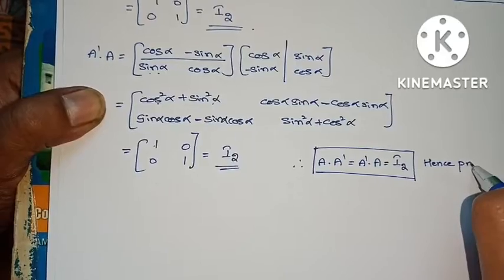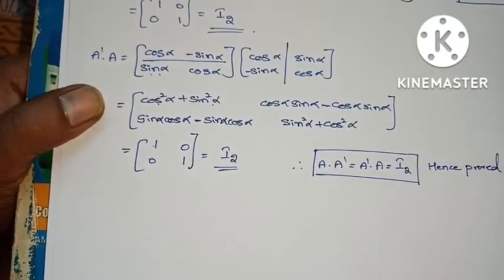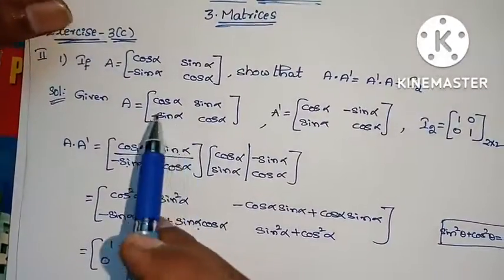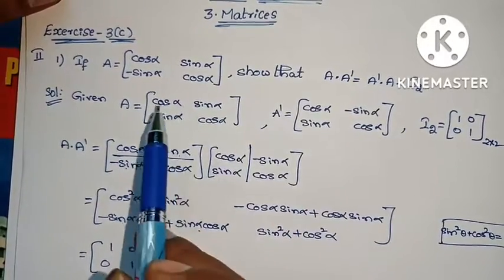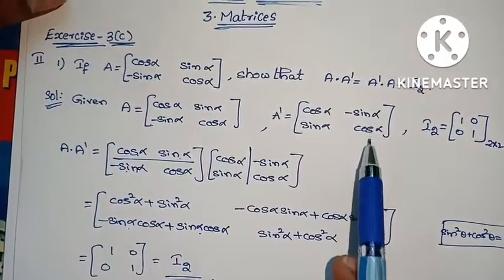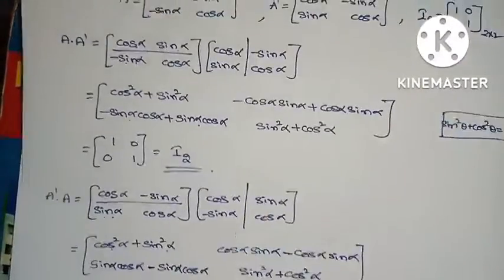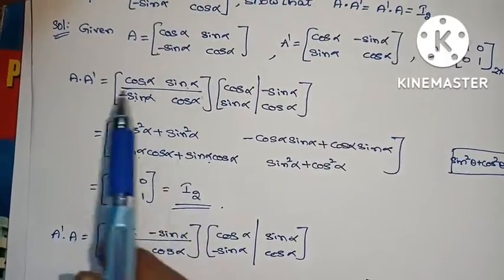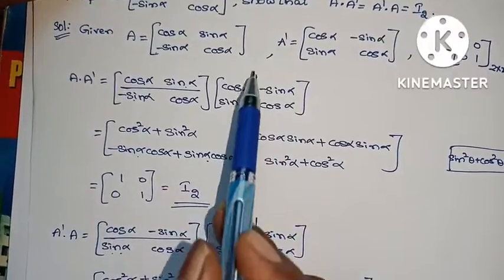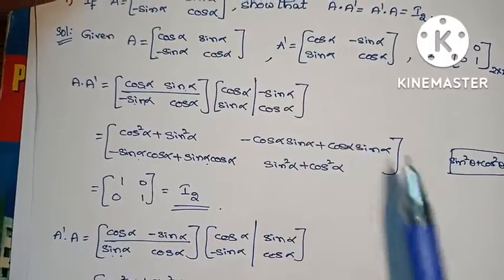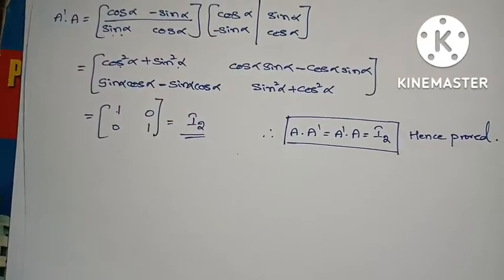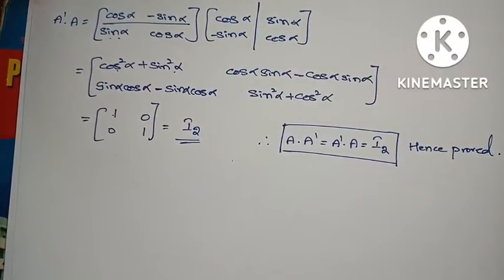Show that is done and covered, hence proved. The problem is quite simple: A into A transpose — first row first column, second row second column. Multiplication is already explained: first row first column, first row second column, second row first column, second row second column. Multiply like that and verify. Very simple. Next problem.